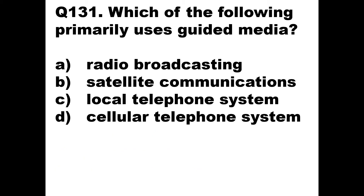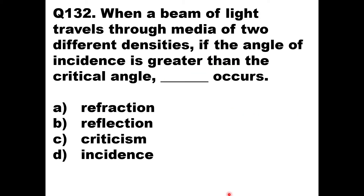Question 131: Which of the following primarily uses guided media? The options are radio broadcasting, satellite communication, local telephone system, and cellular telephone system. Radio broadcasting and satellite communication use unguided media. Cellular is also wireless and unguided. Local telephone system uses guided media because phone lines physically connect points. The answer is option C — local telephone system.